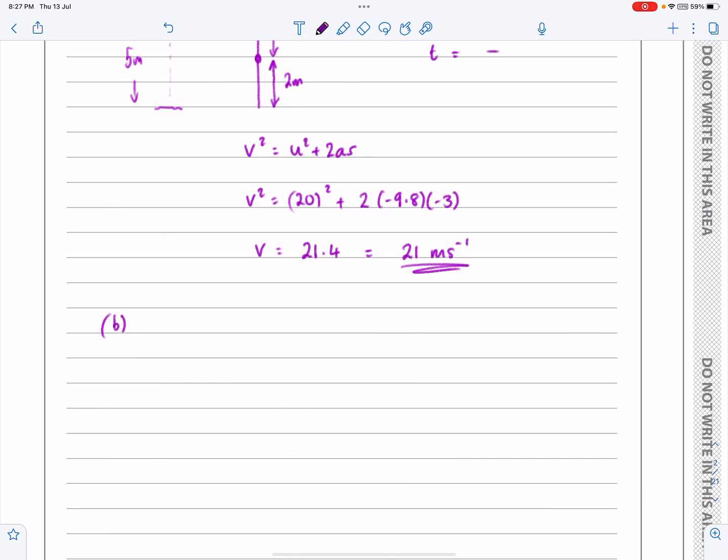So for part B, SUVAT gives me, as we just said, this is question number one, so it's not going to be too complicated. S is minus 5, U is 20, V, I'm not interested in V now, it's a different journey that I've got here. A is minus 9.8, and T is the point at which I'm interested in.